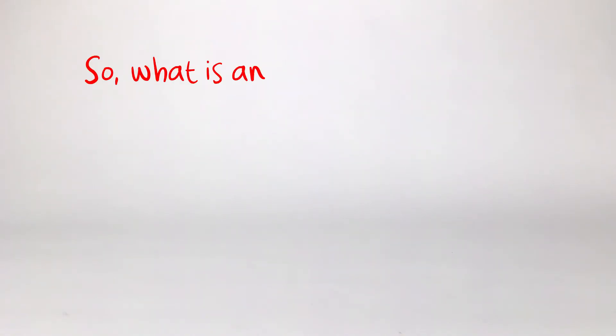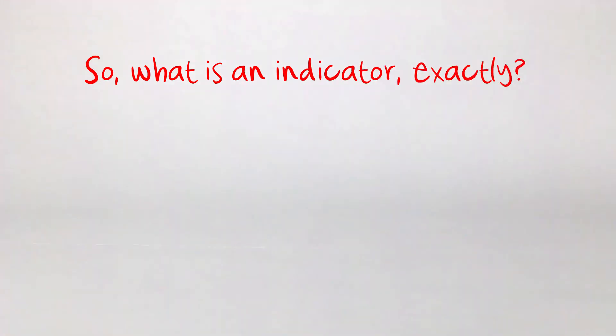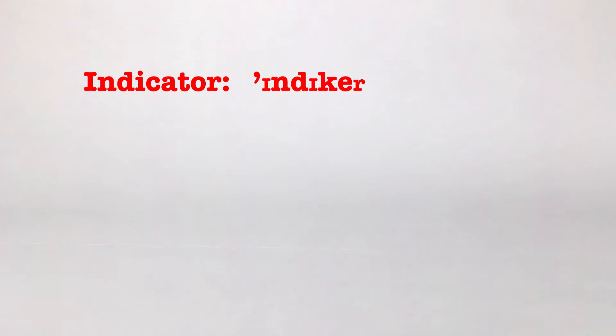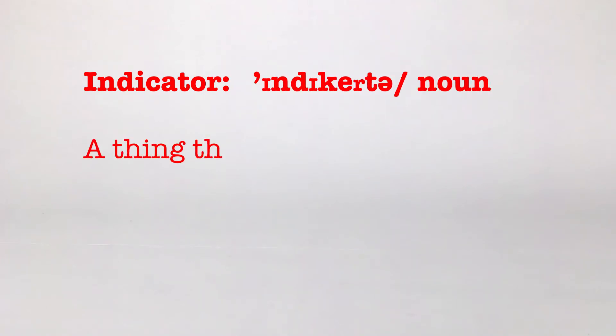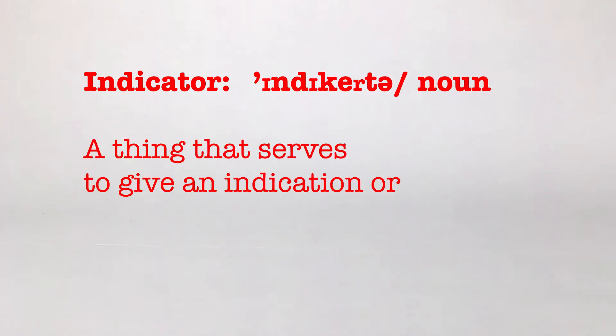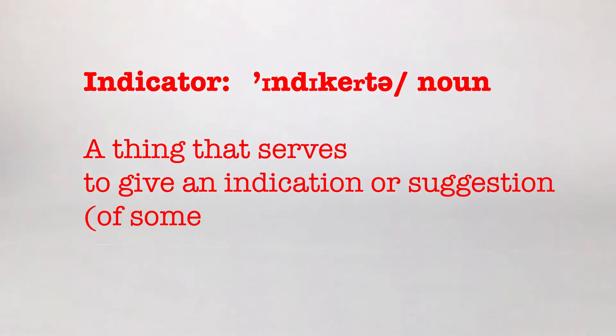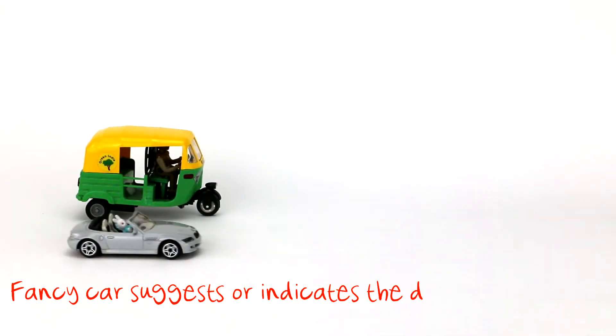So, what is an indicator exactly? According to the Oxford English Dictionary, an indicator is a thing that serves to give an indication or suggestion of something else. For example, car ownership is frequently used as an indicator of affluence.